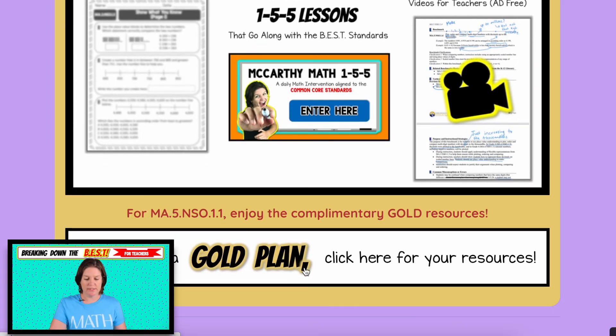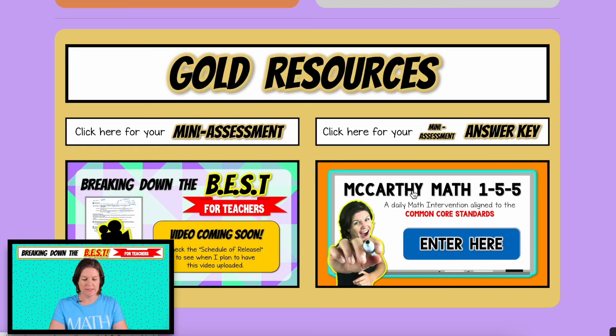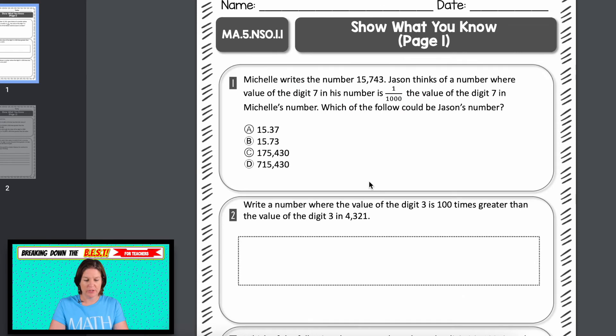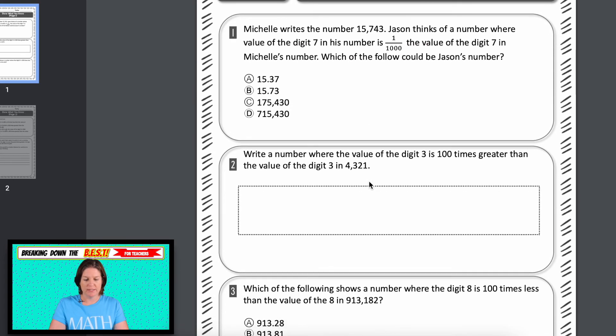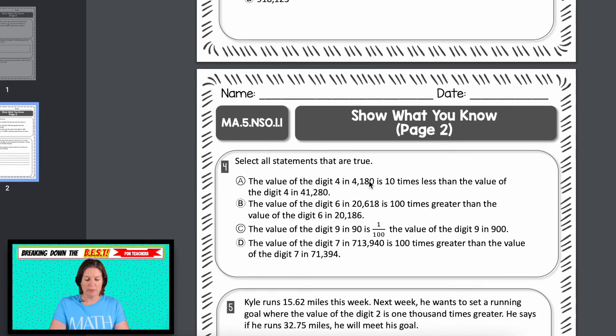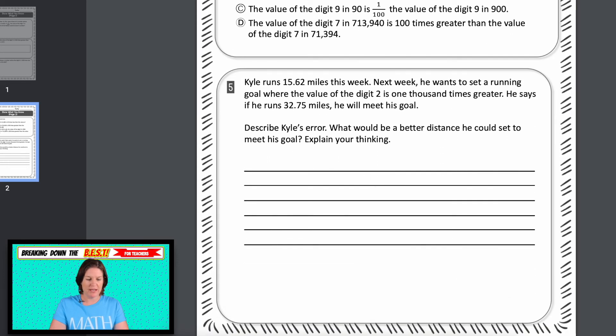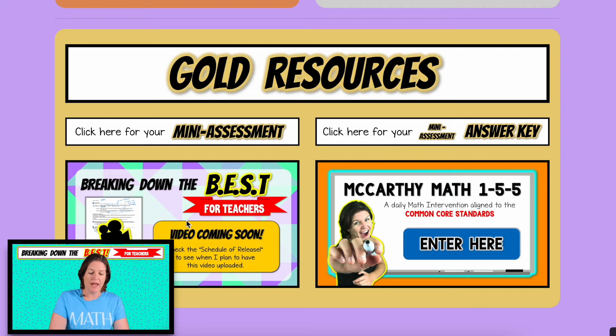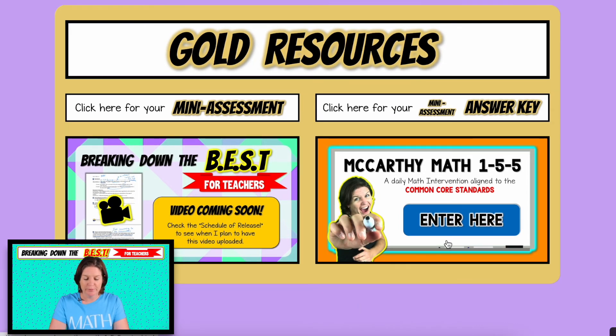And then for the gold resources, click here. Everybody has access to this as well. The only thing that you might not have access to is the McCarthy Math 155 videos if you do not have the gold membership, but I'll show you what's behind there. So for the gold resources here, you'll have access to the mini assessment. Show you that here is a mini assessment, different kinds of problem types. You also have the answer key that's with it. The ad-free version of the video that you're watching is right here. However, they are available. These videos are available on YouTube. Just one of the perks of having the gold plan is that you bypass all the ads that come with it from YouTube. And then McCarthy Math 155 was the program that I created when we had the Common Core standards in Florida. We put our own spin on them. But now we've changed it to the BEST. So a lot of people asked me like, can we still have access to 155? And if you wanted that, yes.